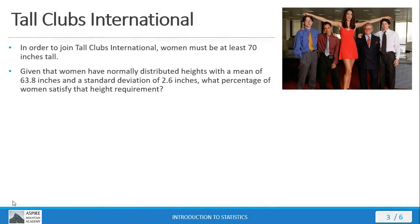Let's look at an example problem involving Tall Clubs International — a social group started for unusually tall people. To join, women must be at least 70 inches tall. Given a normal distribution for women's heights with a mean of 63.8 inches and a standard deviation of 2.6 inches, the question is: what percentage of women satisfy the height requirement to join Tall Clubs International?